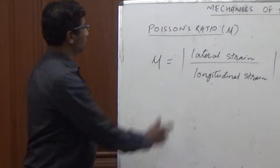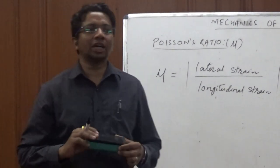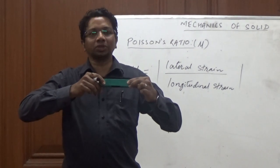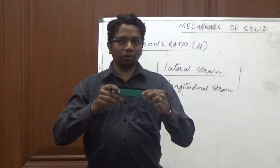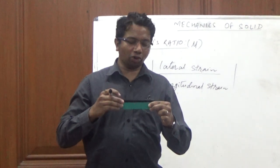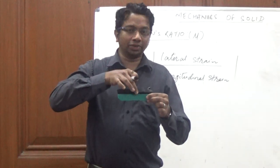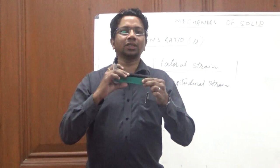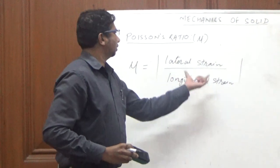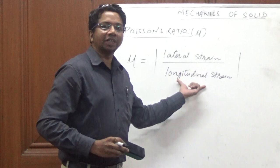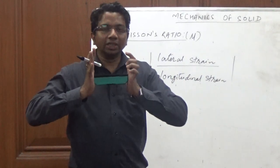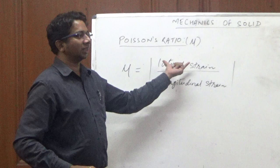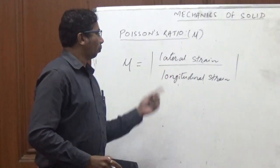This ratio is always negative, that's why we use the modulus (absolute value). For example, let's take a rubber eraser. If you apply force in the longitudinal direction, you can observe that the length of the eraser increases, but if you observe in the perpendicular directions — the x-direction, y-direction — you will observe that those dimensions always decrease. So, if longitudinal strain increases, lateral strain always decreases. On the other hand, if the longitudinal strain decreases, then the lateral dimension increases. It is always negative, that's why we assign the modulus here.